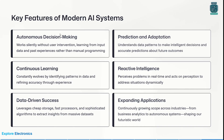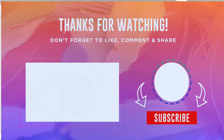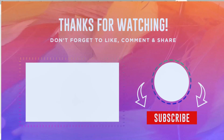Key features of modern AI systems: autonomous decision making — learning from input data and automatically taking decisions; continuous learning — continuously evolving and improving accuracy by identifying patterns; data-driven success — processing data sets through algorithms to give accurate results; prediction and adaptation — understanding data patterns to make intelligent decisions and accurate predictions; reactive intelligence — perceiving problems in real time and acting dynamically; and expanding applications — continuously growing scope across industries from business analytics to autonomous systems, shaping our future world. In the next video, we will cover Chapter 2: Machine Intelligence.